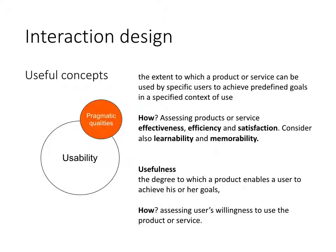The usability concept means that it is the extent to which a product or a service can be used by specific users to achieve predefined goals in a specific context. Usability means that we focus on assessing and evaluating a specific product and service across three main dimensions: whether the product is effective, efficient, and satisfactory. Sometimes we also consider two other dimensions like learnability and memorability. We can also measure usefulness — the degree to which a product enables users to achieve their goals — assessing, for example, users' willingness to use a product or service.